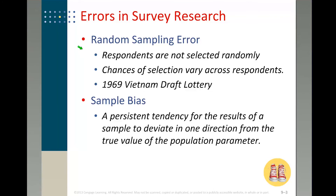Random sampling error happens when you select respondents but they are not selected randomly. That means you have a higher chance of selecting a certain group of people, and the data you get are biased — they do not represent the whole population very well. A given example is the 1969 Vietnam draft lottery. If you're interested, just Google it. It's an interesting example showing how random sampling error can occur — if the probability of each person being selected is not the same, you have a biased sample.